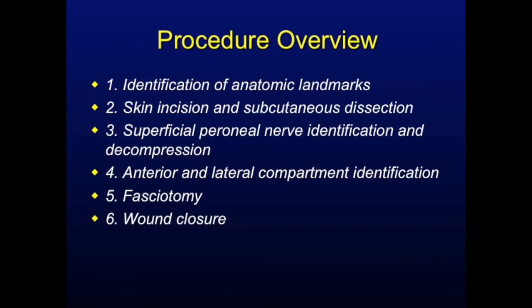The procedural steps include the identification of landmarks and incisional marking, skin incision and dissection, identifying the superficial peroneal nerve and decompressing it, identifying the anterior and lateral compartments, the lateral fasciotomy, followed by the anterior fasciotomy, and then finally wound closure.